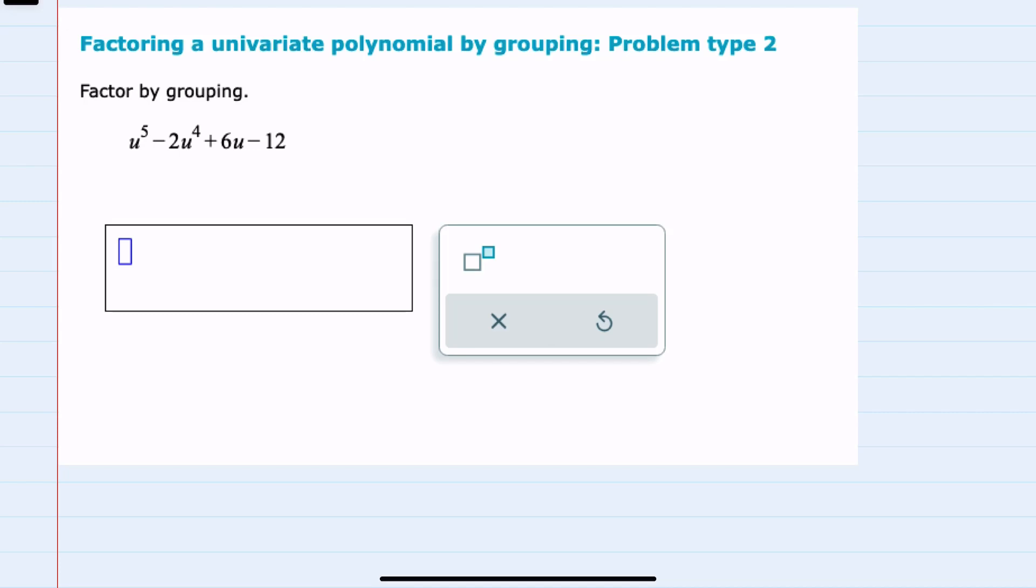In this video, I'll help you with the ALEKS problem type called 'Factoring a Univariate Polynomial by Grouping, Problem Type 2.' We're given our expression here that we're going to factor by grouping.